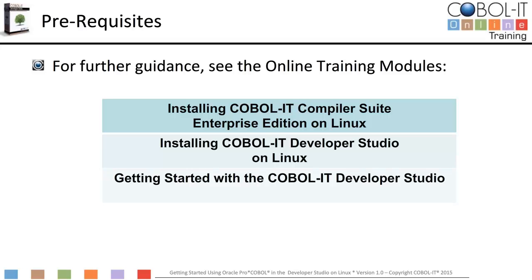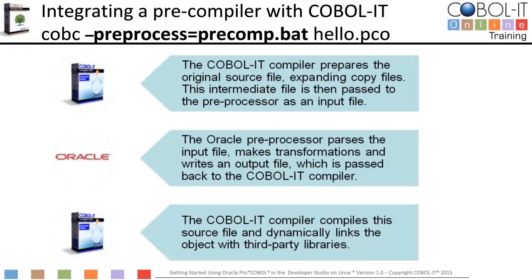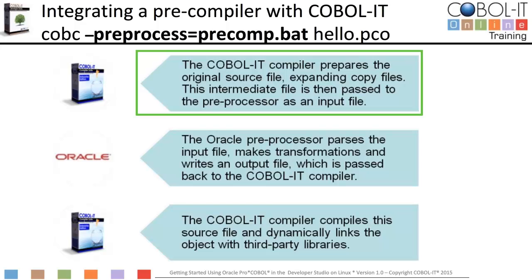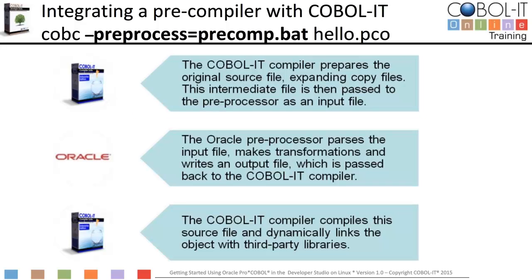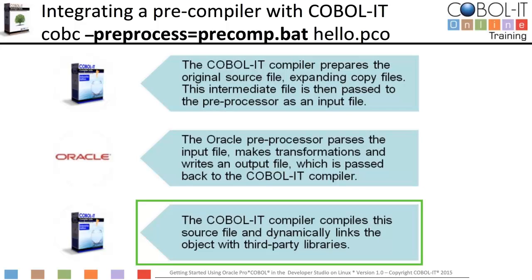We will begin with an overview and some key concepts. Integrating a precompiler with COBOL IT uses the "-pre-process-compiler" flag. First, the COBOL IT compiler prepares the COBOL source file, expanding copy files. This intermediate file is then passed to the preprocessor as an input file. The Oracle preprocessor is run from the preprocessor command file — in our example, called precomp.bat. The Oracle preprocessor parses the input file, makes transformations, and writes an output file, which is passed back to the COBOL IT compiler. Finally, the COBOL IT compiler compiles this source file and dynamically links the object with third-party libraries.